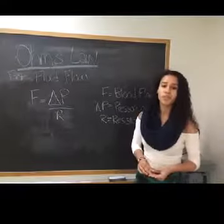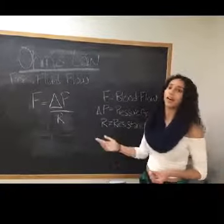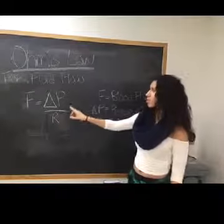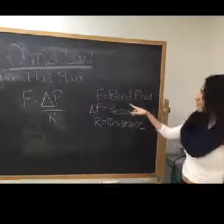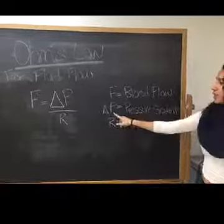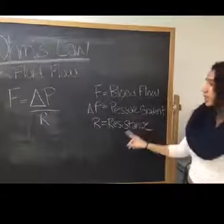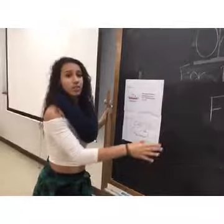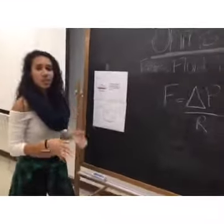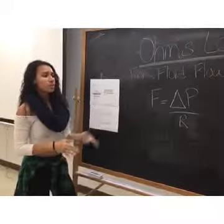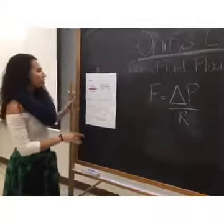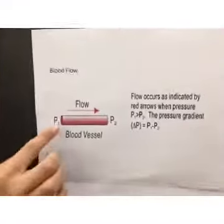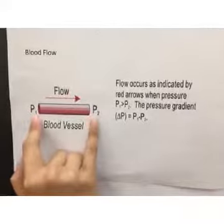Before we get to the fight-or-flight response, let's look at the physics of how blood works. Ohm's law for blood flow is F equals delta P over R. F is going to be our blood flow, delta P is going to be our pressure gradient, and R is our resistance — basically anything that's making it hard for the blood to flow. Delta P is the pressure it takes for the blood to flow from P1 to P2, from one point to the next.